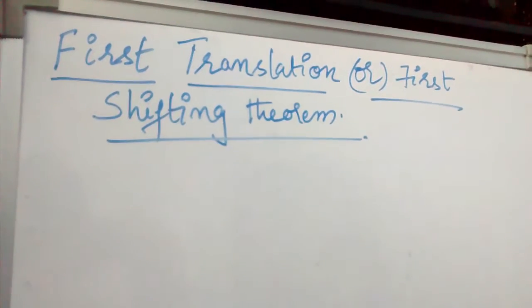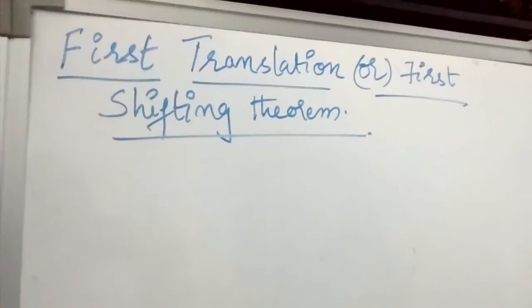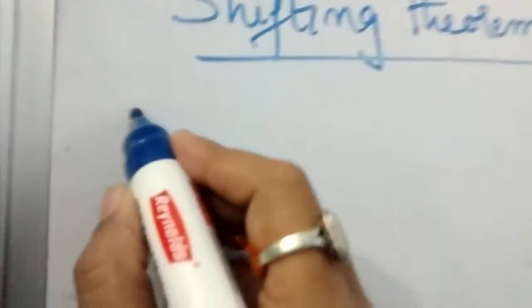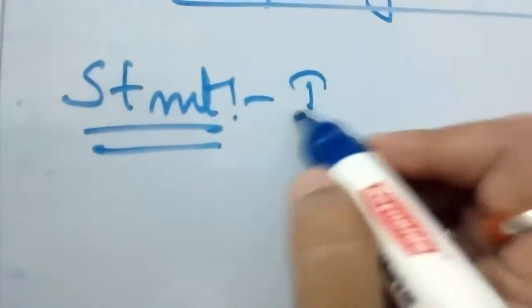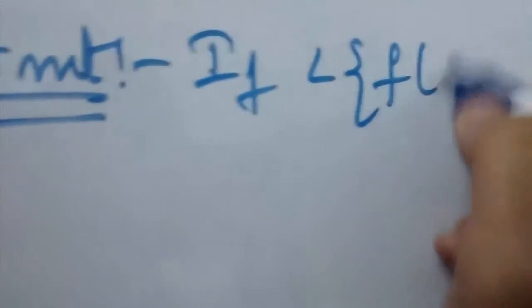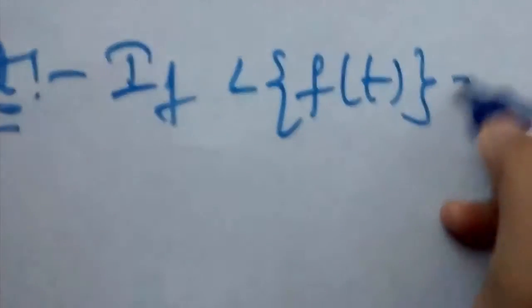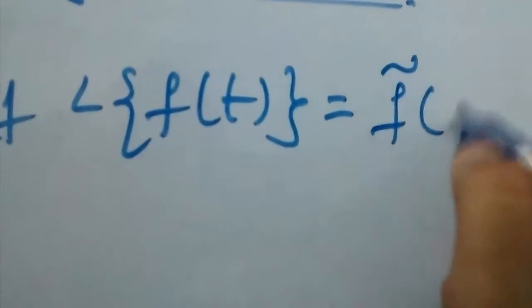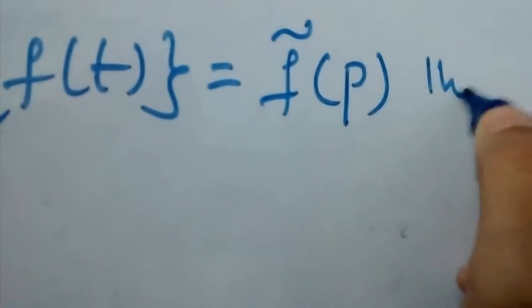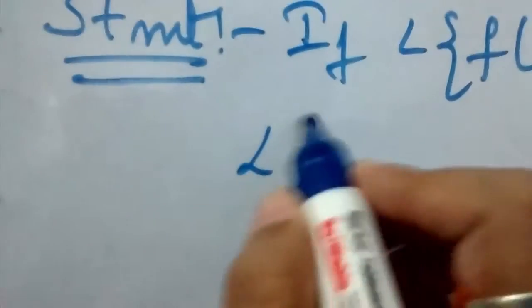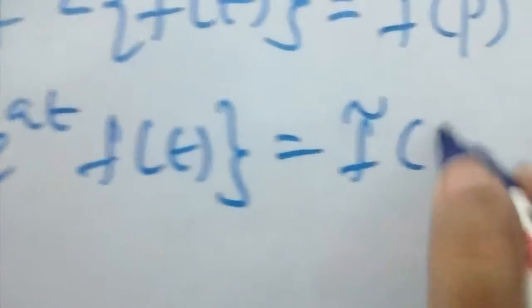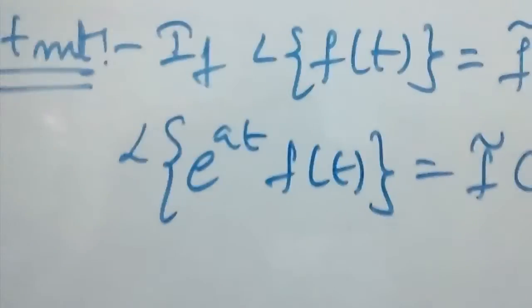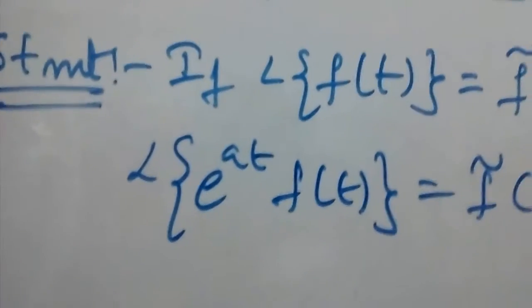Today we will see the First Translation or First Shifting Theorem. The statement is: if L{f(t)} = f̄(p), then L{e^(at) · f(t)} = f̄(p - a). This is the statement of the First Translation or First Shifting Theorem.